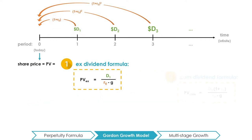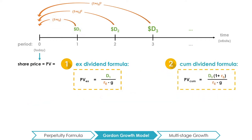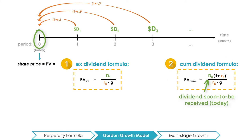The cum-dividend formula calculates the price of the stock with growing dividends by equating it to D0 times 1 plus RE divided by RE minus G, where D0 is the amount of this period's dividends that we, as the investor, anticipate on receiving.